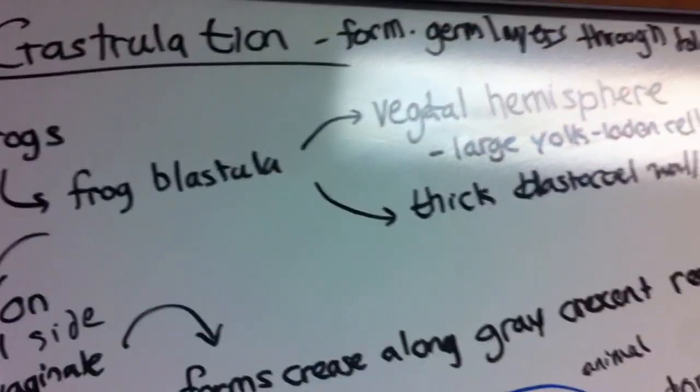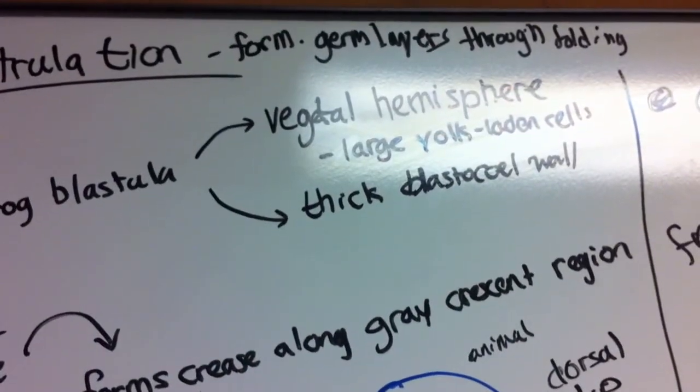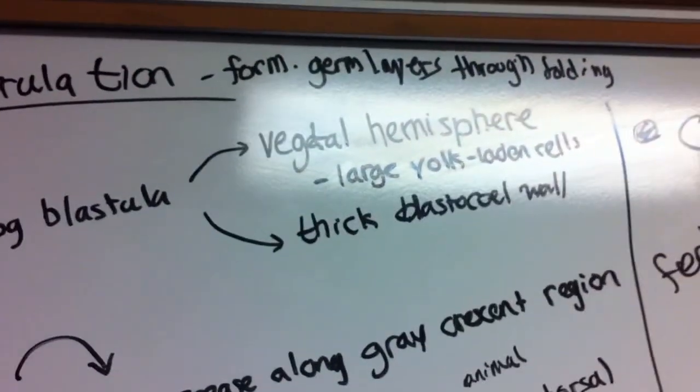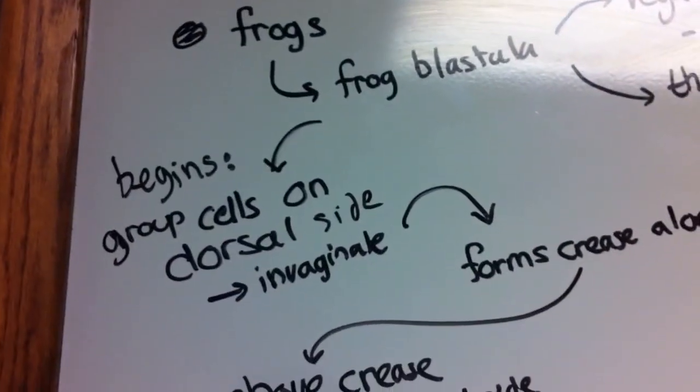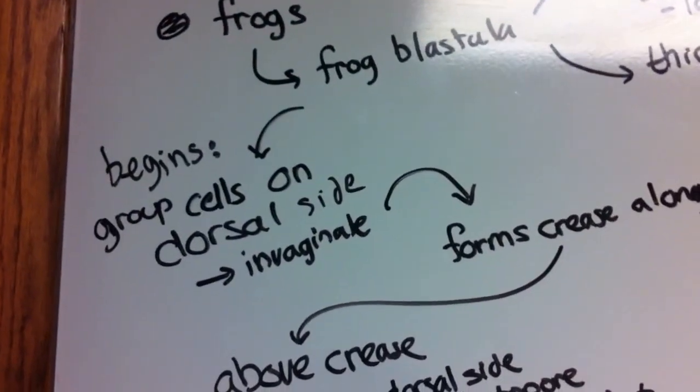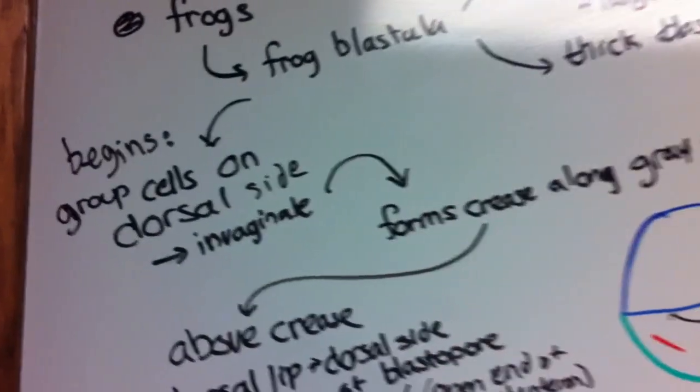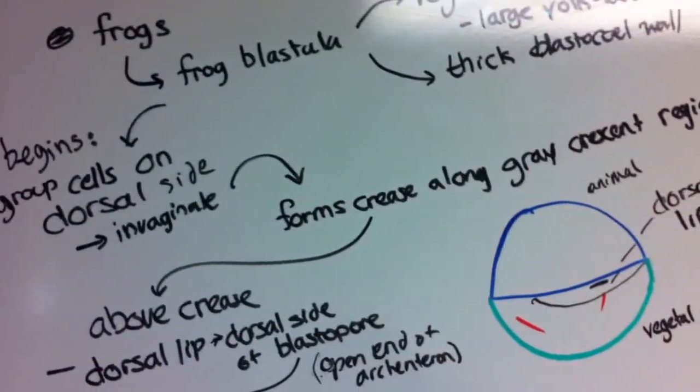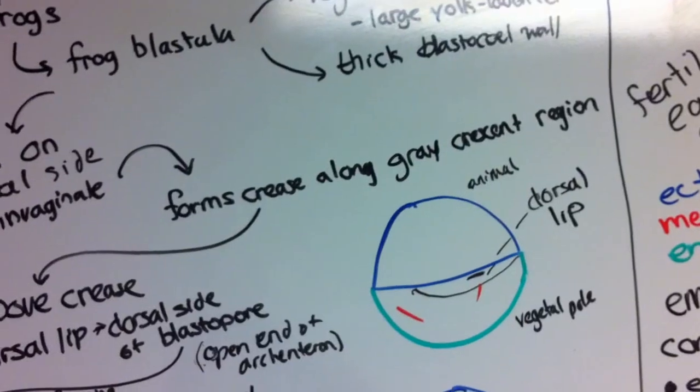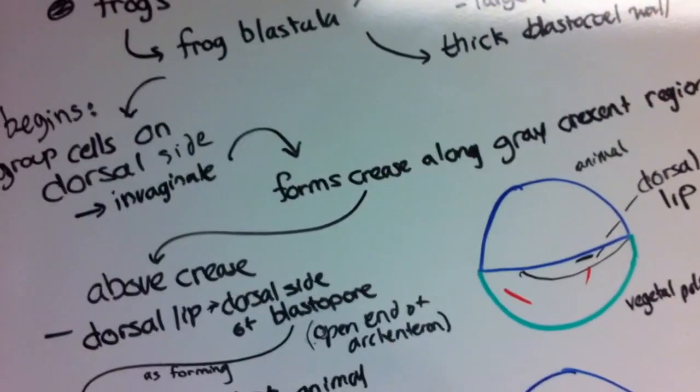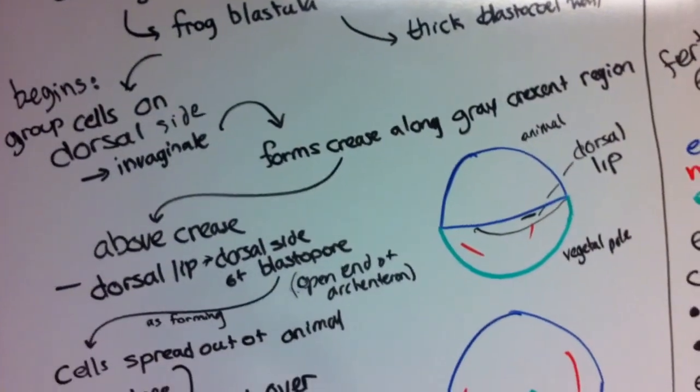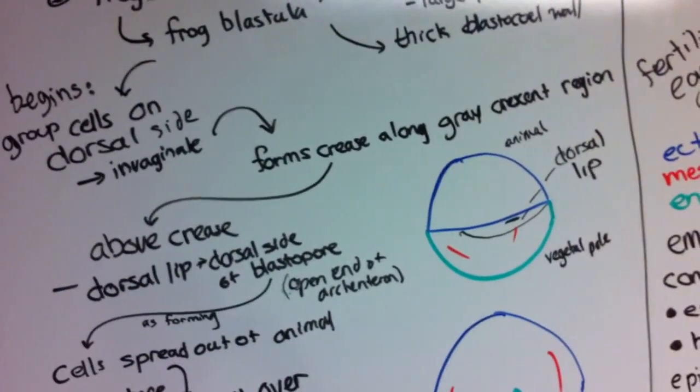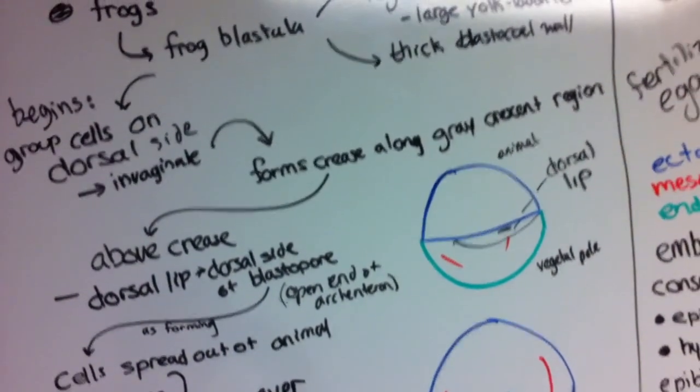A frog blastula will have a vegetal hemisphere with large yolk-laden cells. It will also have a thick blastocele wall. Gastrulation begins when a group of cells on the dorsal side start to invaginate or fold in. As these cells invaginate, they start to form a crease along the gray crescent region. Above this crease, we have a structure called the dorsal lip, which forms the dorsal side of the blastopore.